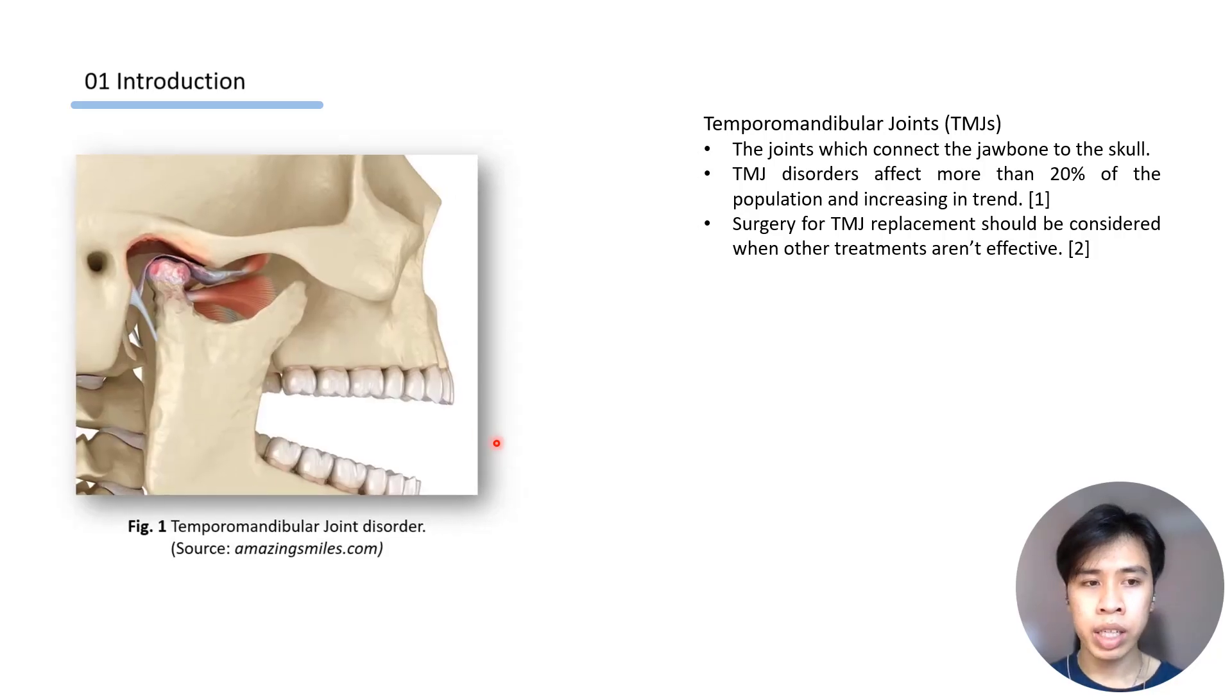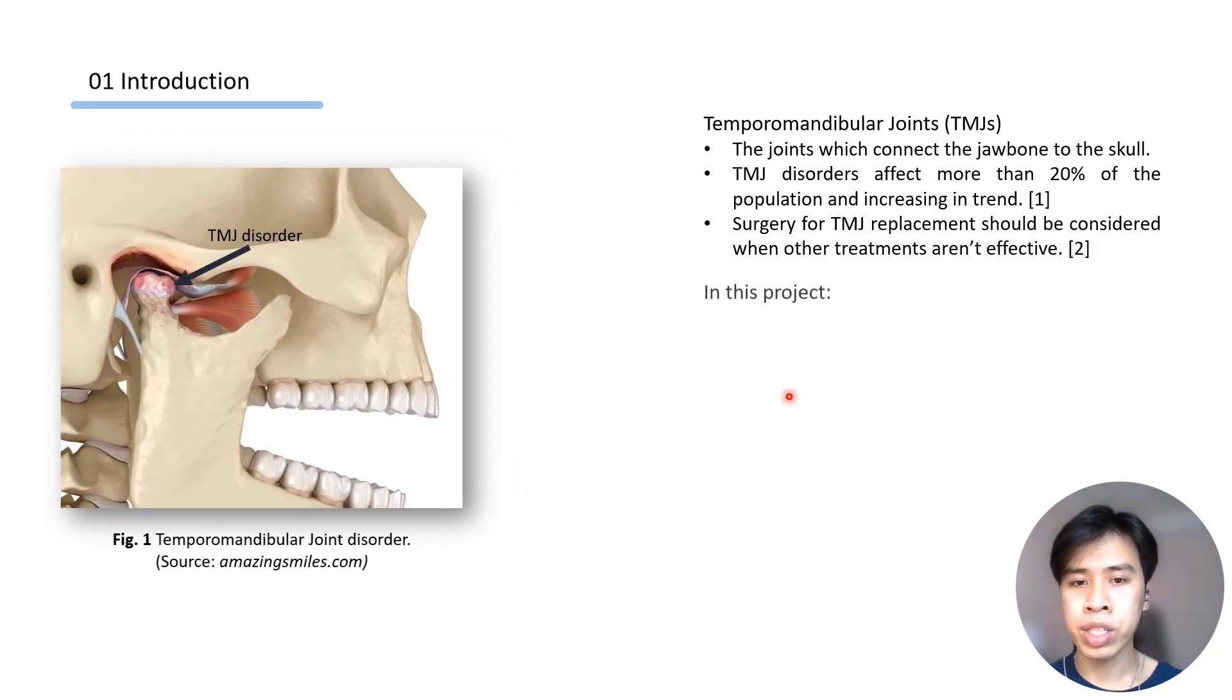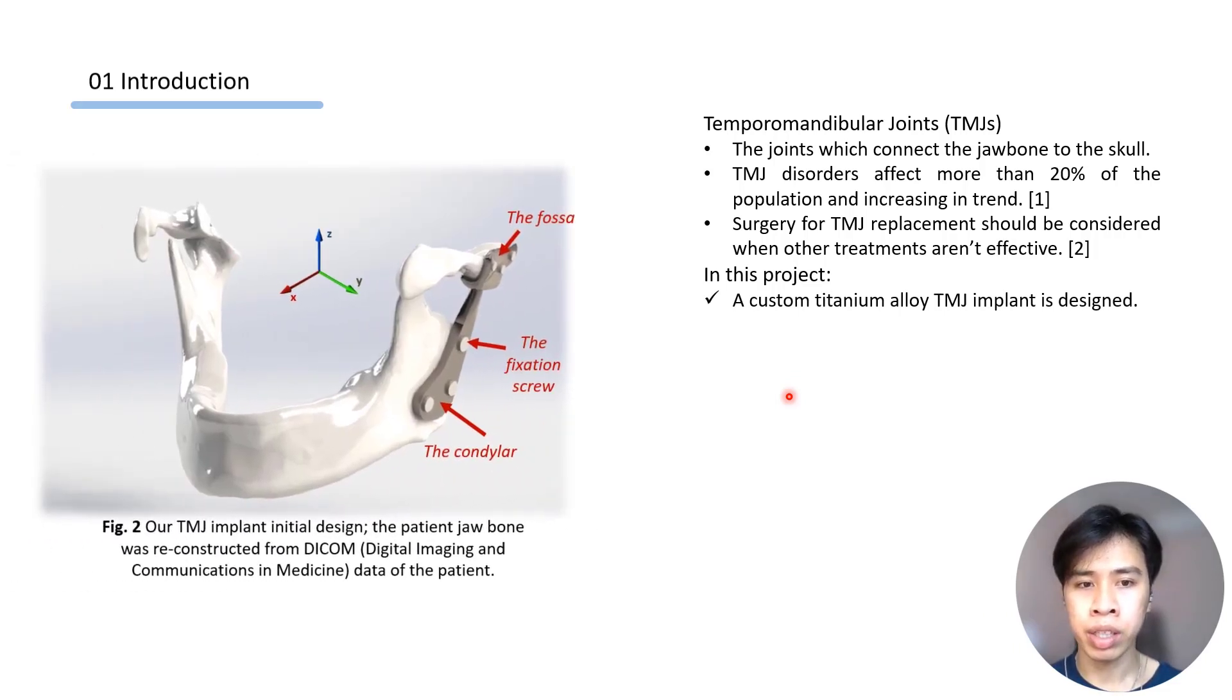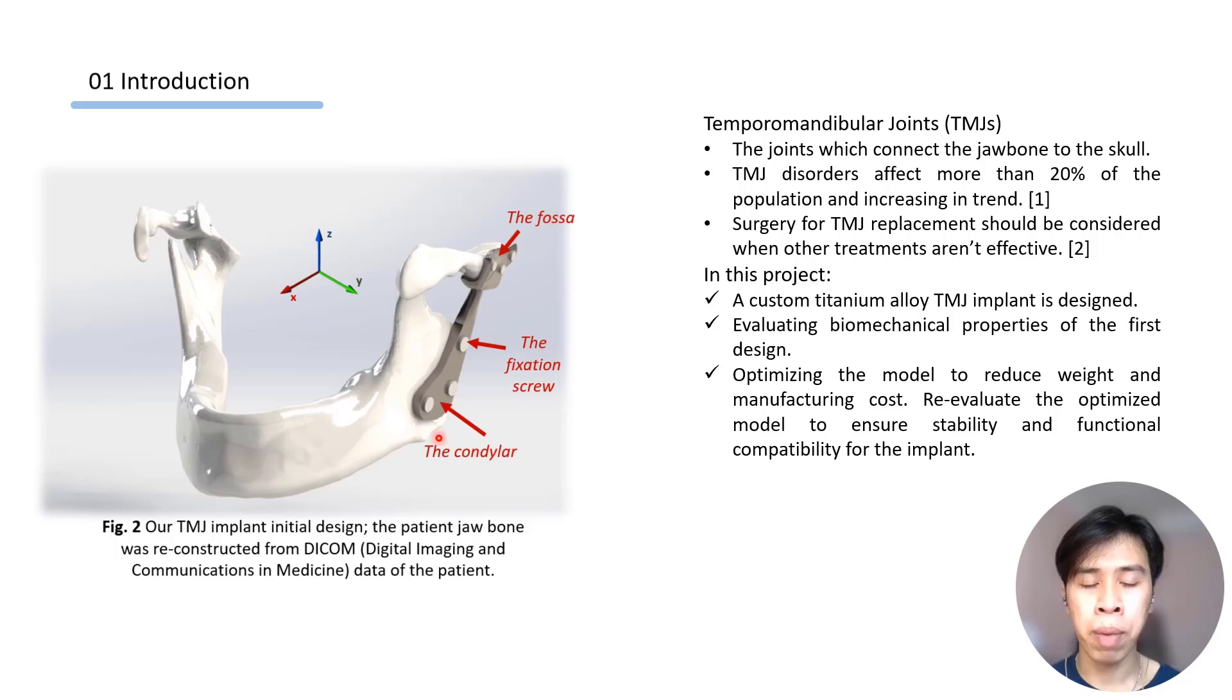In this project, we will propose an initial design for a TMJ implant. We will do a biomechanical evaluation for the whole system. And for this TMJ implant, after that, we will optimize the condylar part for the TMJ to reduce weight and manufacturing costs. We will re-evaluate the optimized model again to ensure the stability and functional compatibility for the model. All of this will be conducted using Altair Inspire.